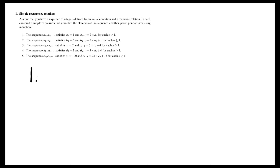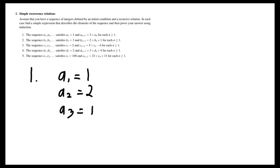For the first question, we're going to just have a look at a few of the values in the sequence. We know that a1 is 1, a2 is double that, a3 is double a2, and so on. And it's pretty easy to recognize a pattern that these are just powers of 2.